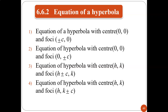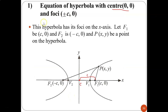Now we will look at the equations of a hyperbola. There are four cases. First, when you have a hyperbola with center (0, 0) and foci at (±C, 0) — meaning the X-coordinate is changing, so the hyperbola is on the X-axis. Second, still center (0, 0) but the Y-coordinate changes. Third, center (H, K) with foci at (H±C, K). Fourth case is similar with center (H, K) but Y changes.